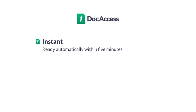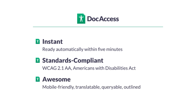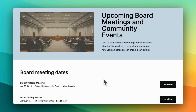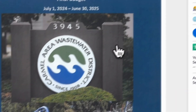With Doc Access, we've changed this. We've made accessibility instant, so your documents are ready within five minutes of you posting them on your website with no action required by you. We've made your documents completely compliant with the WCAG 2.1 AA standards. Doc Access works simply by changing all of your PDF links automatically to open in the Doc Access Viewer, which shows the print-friendly version that people would expect.